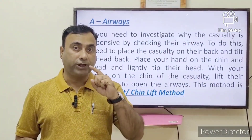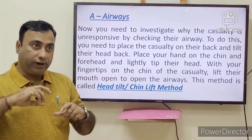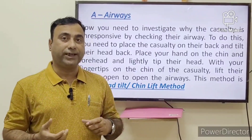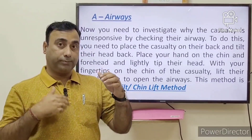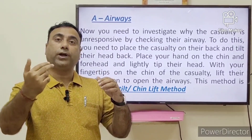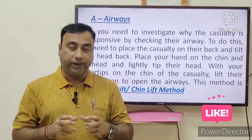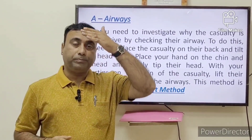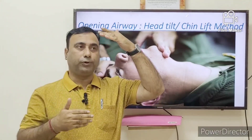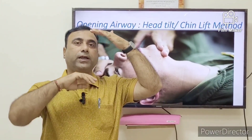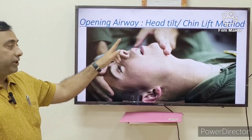After the AVPU scale, we move to A — Airway. When a casualty loses consciousness, their tongue can block the airway. To open it, use the head tilt chin lift method: place one hand on the forehead and another on the chin, and gently open their mouth to open the airway so air can pass through.